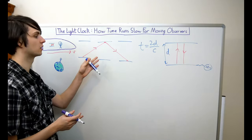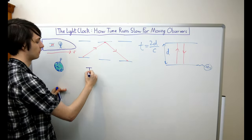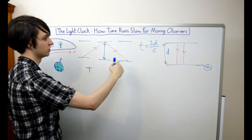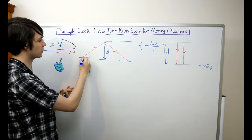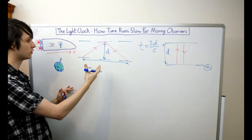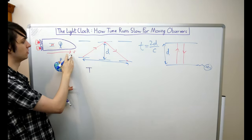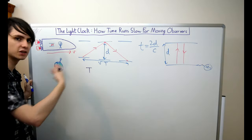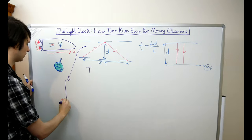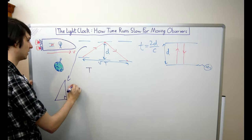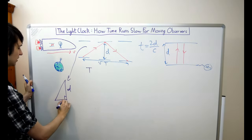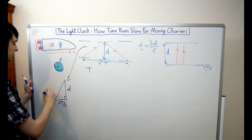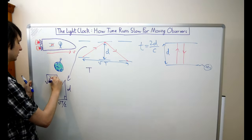Let's call the length of time between ticks of the light clock as measured by the observer on earth capital T. If we want to know what capital T is we need to work out the length of this red line, so let's put in some distances. This distance is the separation between the mirrors which we've called d. This distance down here will be the distance traveled by the light clock during time T — the light clock is moving at speed v, so distance equals speed times time, giving us v times capital T. Looking at the triangle on the left, it's a right-angle triangle with height d and base vT divided by two. Using Pythagoras's theorem, the length of the hypotenuse — the red line — is the square root of d squared plus v squared T squared divided by four.